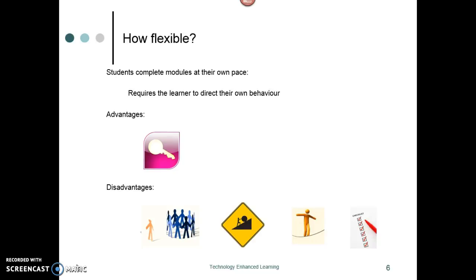Students who complete modules at their own pace — deciding how quickly or slowly they'll go — are different from those on group timelines or tightly constrained milestones, because in this circumstance it requires the learner to direct their own behavior rather than the milestones directing it. The advantages are that self-pacing could be the key that unlocks the door to them actually being able to participate and have an education. Employees or students not in employment will have the opportunity to participate even if they are slow at learning, which provides a great opportunity for them.